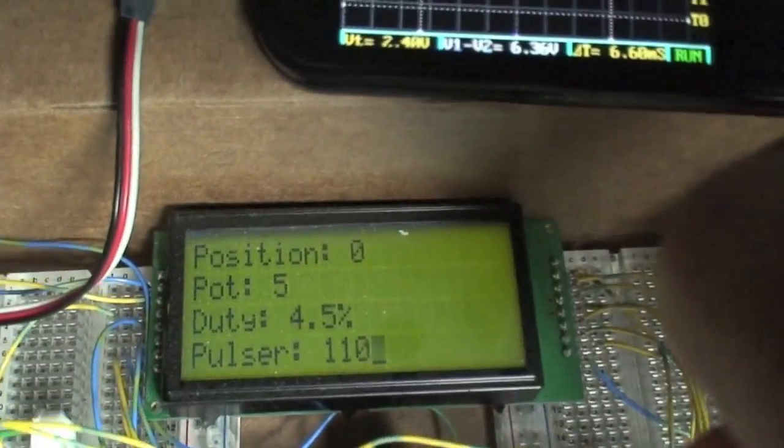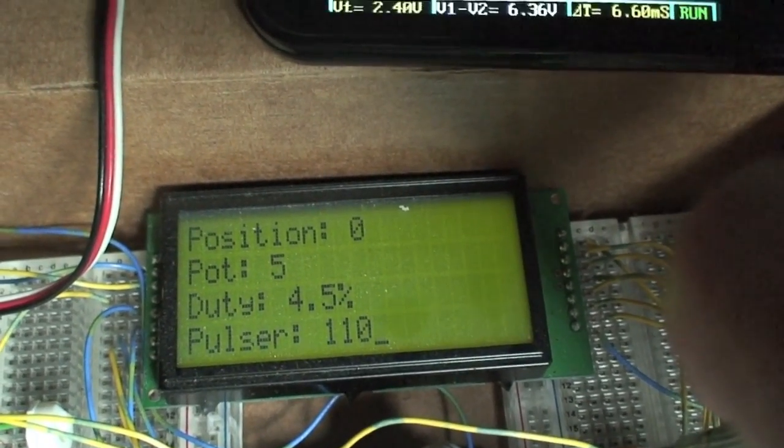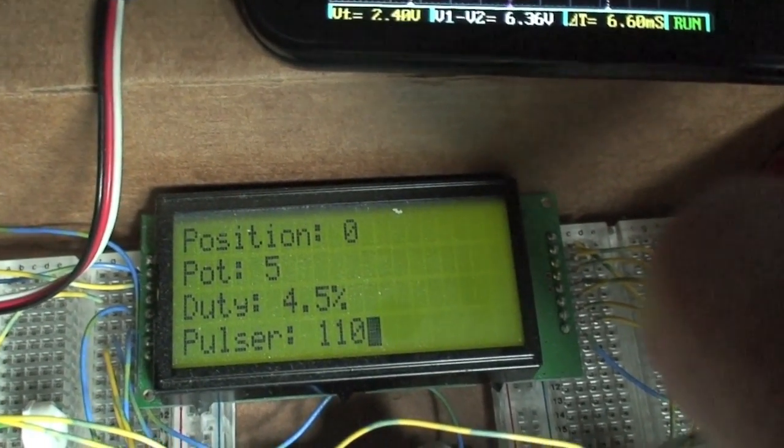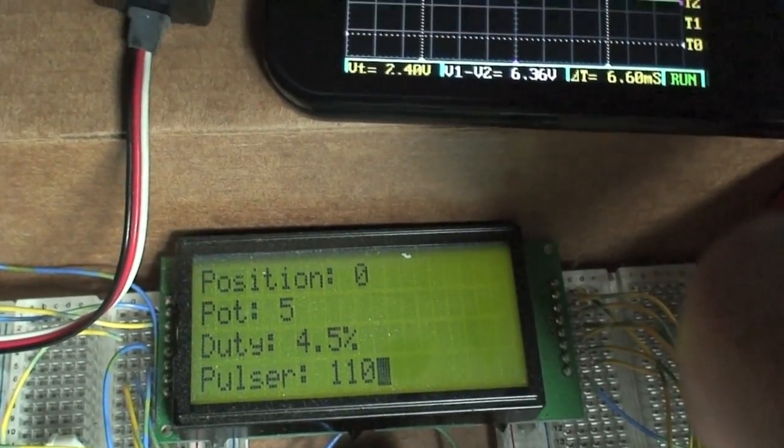And on this display, you can see that we have position, the pot value, the duty cycle, which is how long the pulse is, and then kind of my own little pulse code. It's kind of hard to explain what that does, but it determines the length for the duty cycle.